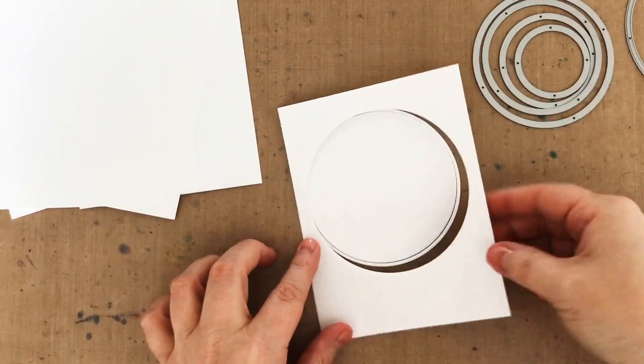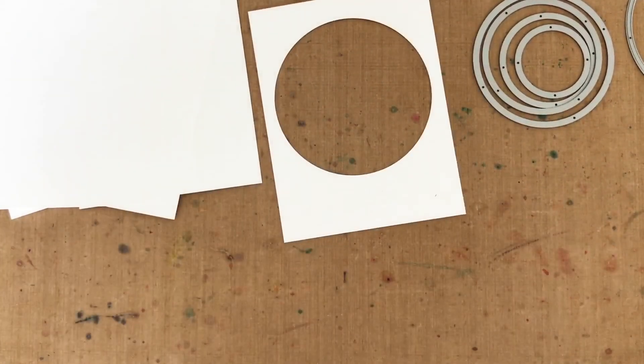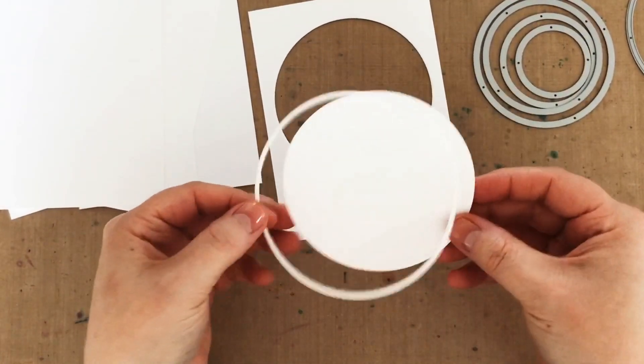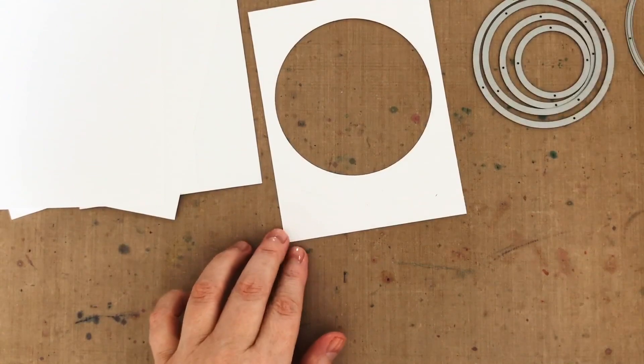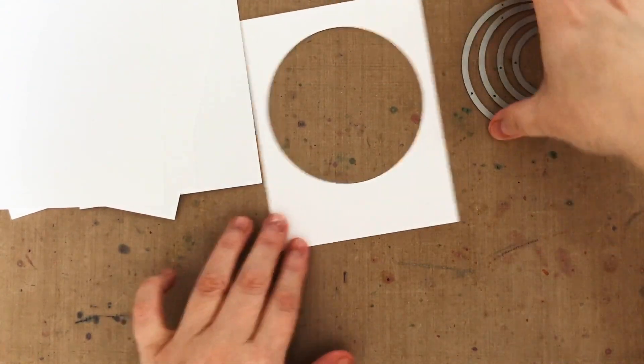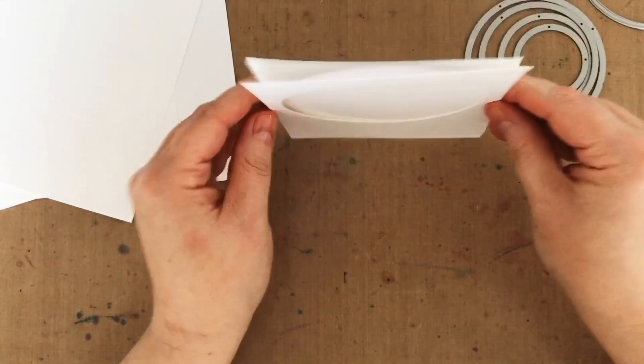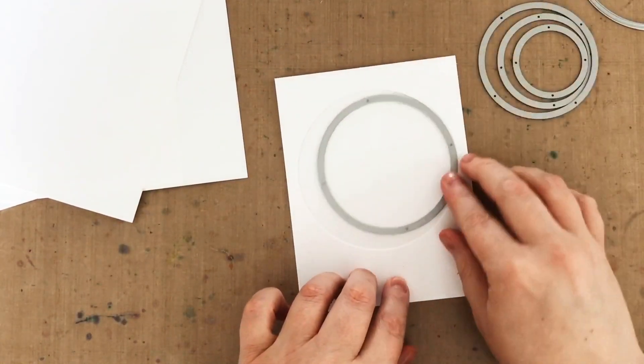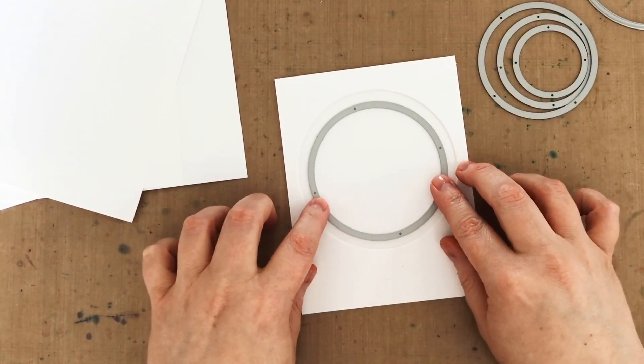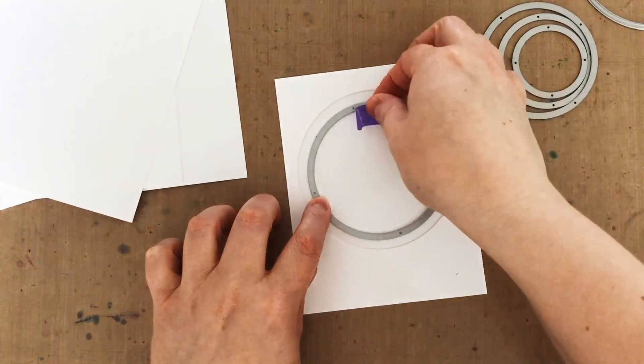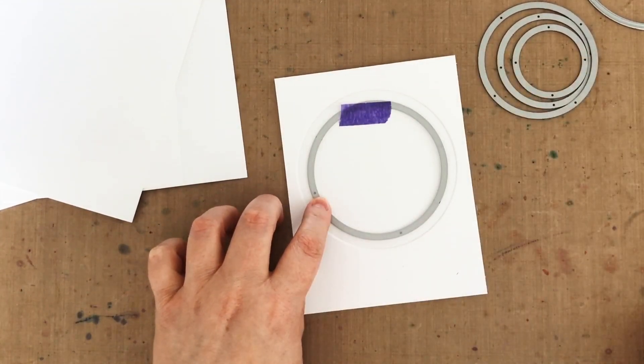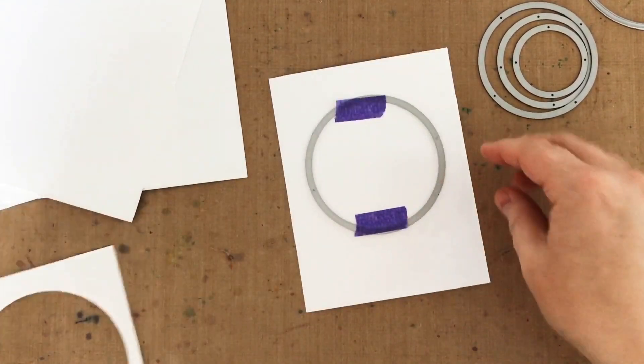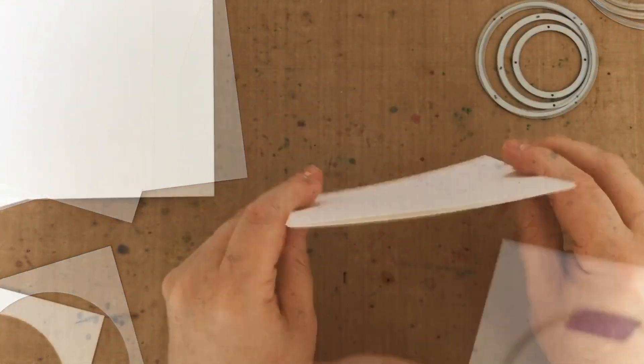Now once you run it through your die cut machine, you see what a bonus this set is, because not only do you get the circles in all the sizes, you get the rings, so those are really fun. I'm going to set them aside for another card. And then I'm going to use that card front that I just die cut as kind of a template to help me put my circle die on my next panel. So I'm going to use the next largest circle on the next A2 panel, secure it with low tack tape again, and then also run it through my die cut machine.